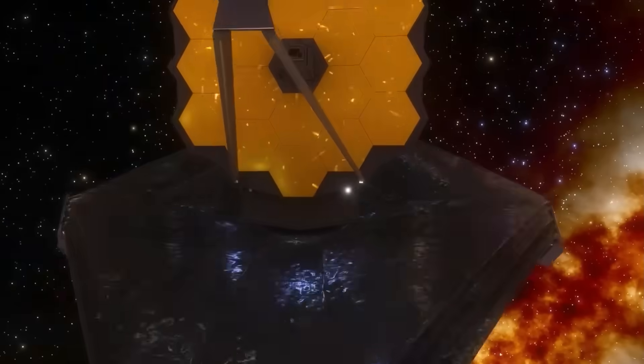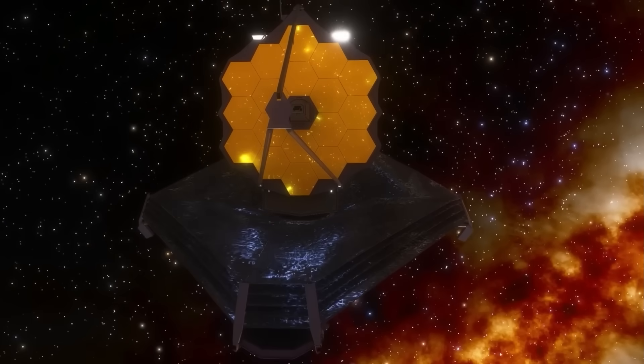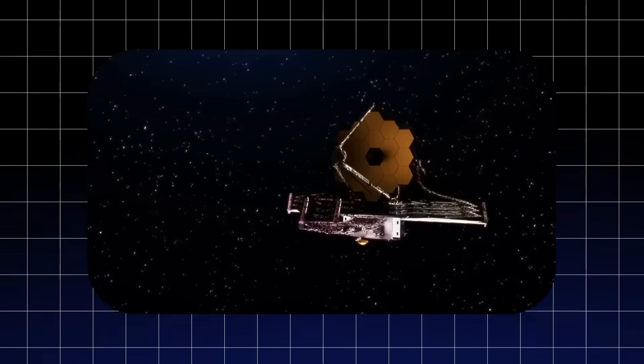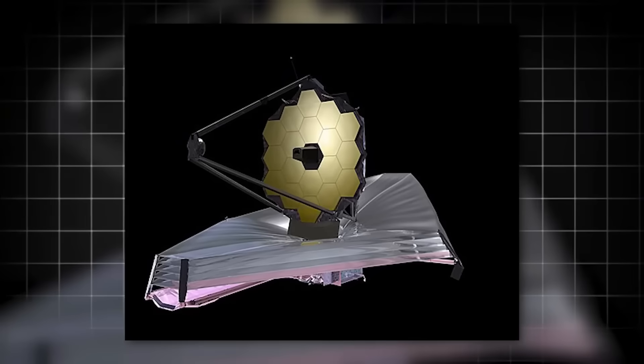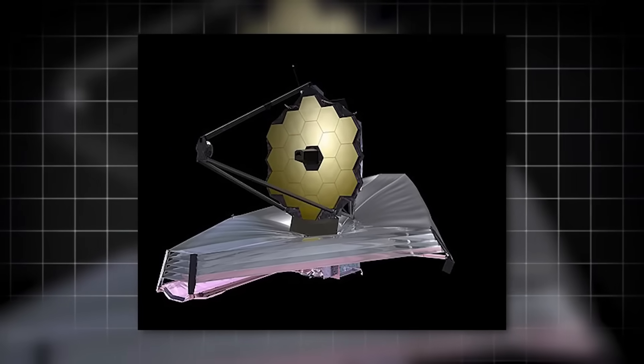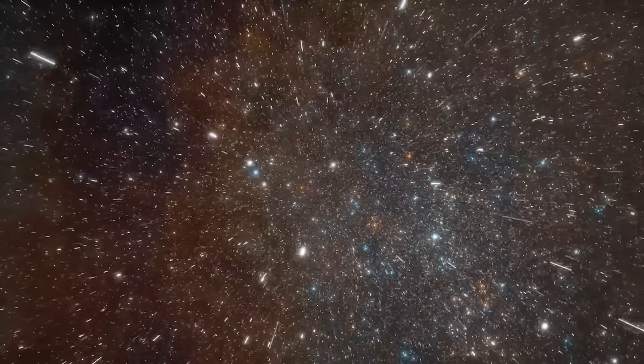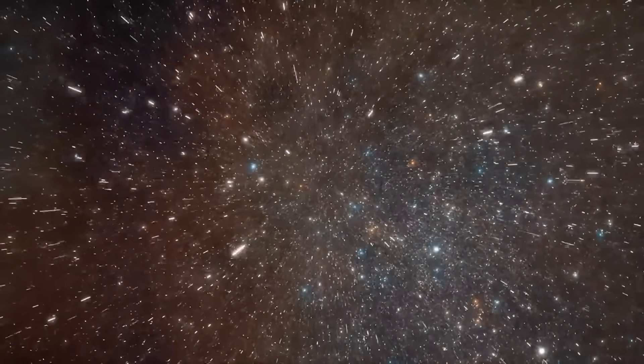It orbits the sun at the second Lagrange point, a million miles from Earth, where its instruments are shielded from both solar and terrestrial interference. Its gold-plated mirrors and cryogenically cooled sensors give it unparalleled sensitivity to the faintest glimmers of ancient light.